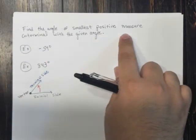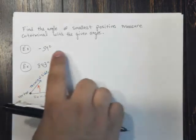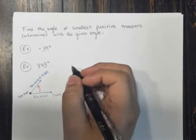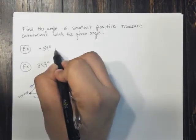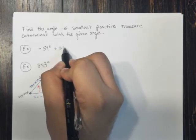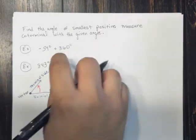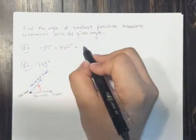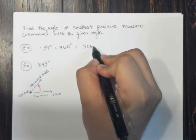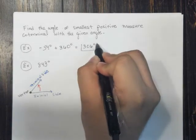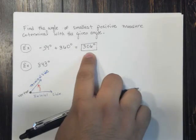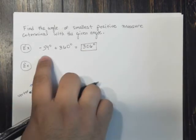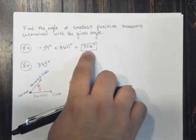It says the smallest positive measure. This is negative, so to get a positive measure, I'm going to need to add a factor of 360 degrees. When I add this, I end up with a positive number, which is 306 degrees. So this is the smallest positive number that is coterminal with negative 54 degrees.